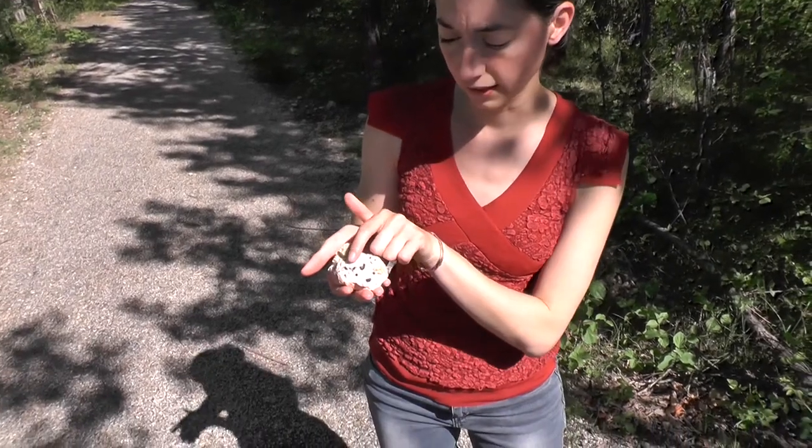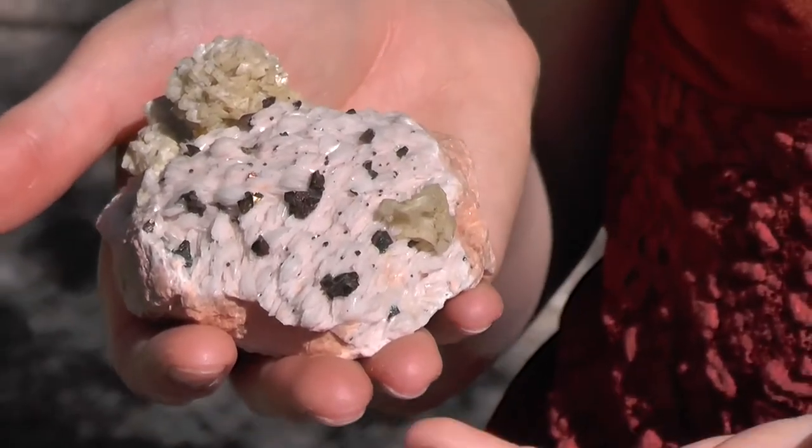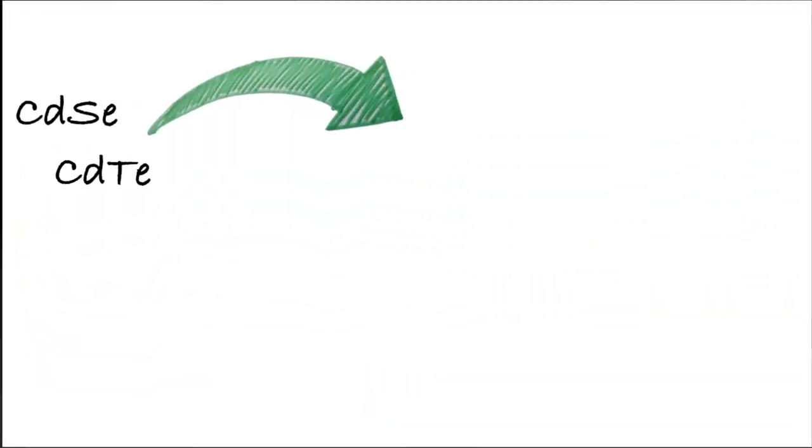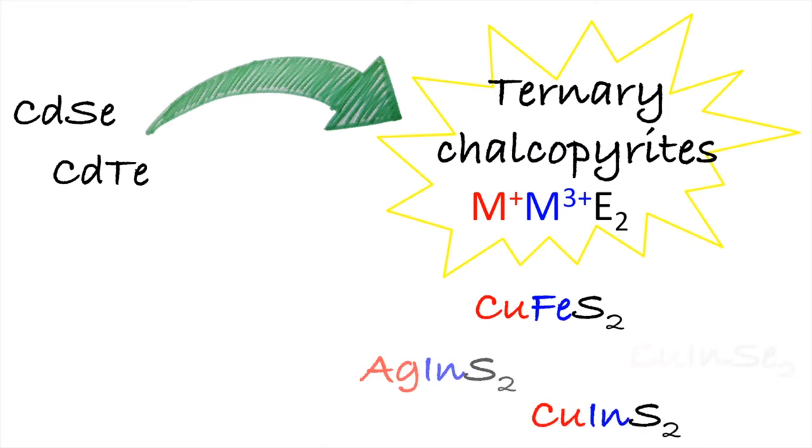However, the most used materials up to now are based on highly toxic metals like cadmium. A very interesting alternative emerged in the last few years, the class of ternary calcopyrites, named after this mineral. You can see here the dark tiny crystals, copper-iron sulfide. This class of compounds is composed by a monovalent and a trivalent metal and two chalcogenides, which leads to a variety of possible structures.